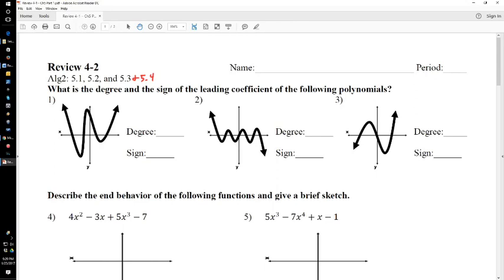It says, what is the degree and the leading coefficient of the following polynomials? Remember the degree. The degree is the number of turns. Number of turns plus 1 is the degree.